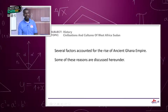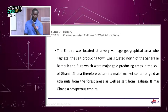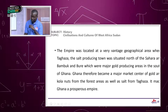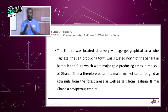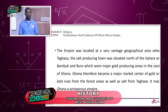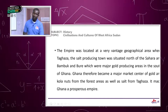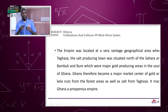The empire was located at a very advantaged geographical area where Tagaza, the salt-producing town, was situated north of the Sahara, and Bamboo and Buri, which were major gold-producing areas, lay to the south of Ghana. Ghana therefore became a major market center for gold and kola nuts from the forest areas, as well as salt from Tagaza. This made Ghana a prosperous empire.